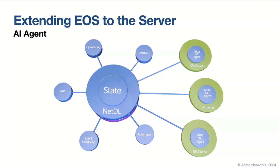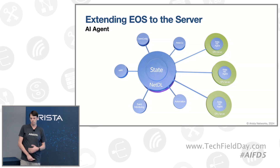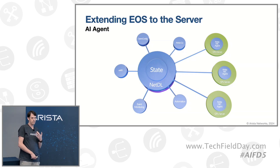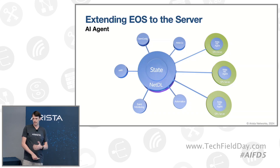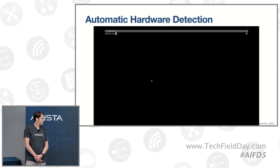The feature we're even more excited about is the AI agent, where we're extending EOS to the NIC servers itself. Arista features a centralized database where we store all of our configuration and also telemetry and state, and agents interact with each other through this database. We've extended this to the NIC, where we can run an agent on the NIC, and that NIC will connect with our EOS database, allowing you to manage and monitor the top-of-rack switch and the NIC connections from one centralized location.